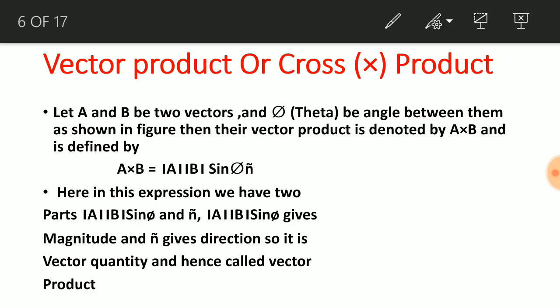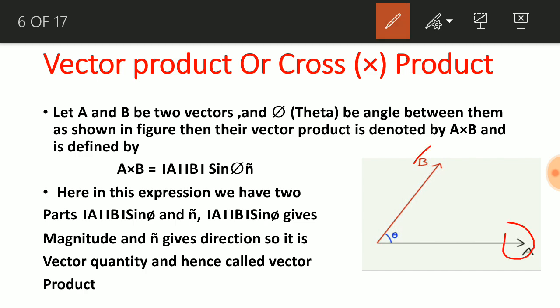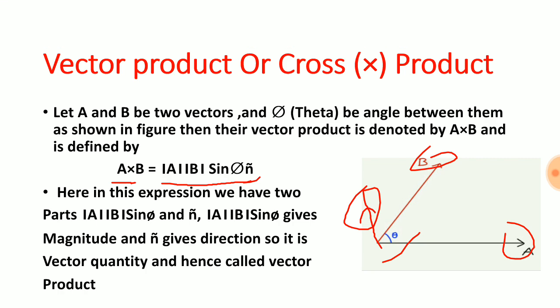Now let us see the vector product or cross product. If A and B are two vectors with angle theta between them, then the cross product is denoted by A×B and defined as A×B = AB sinθ n̂. The term AB sinθ gives the magnitude, and n̂, the unit vector, gives the direction. Because it has direction, this product is a vector quantity, called the vector product or cross product.